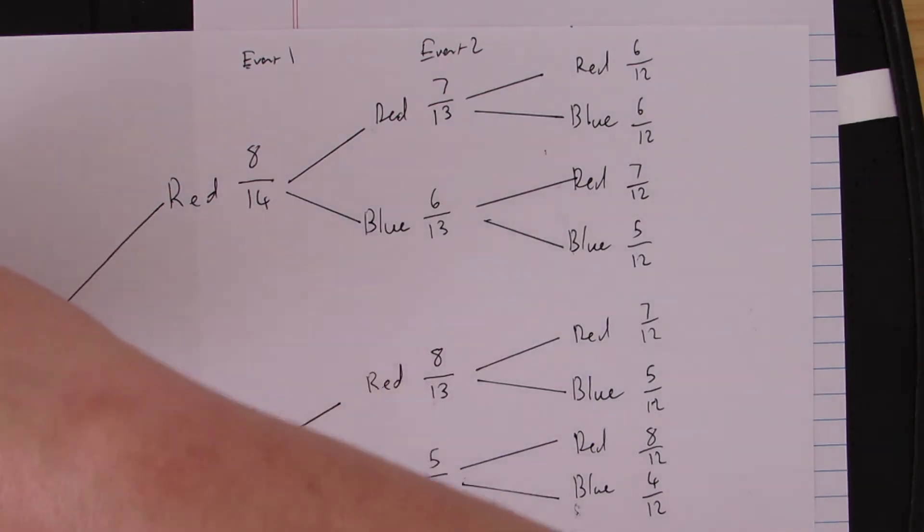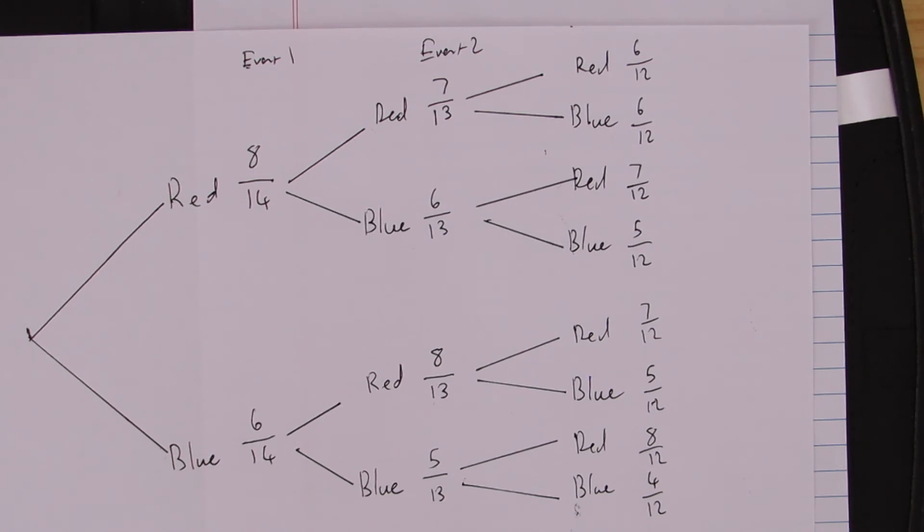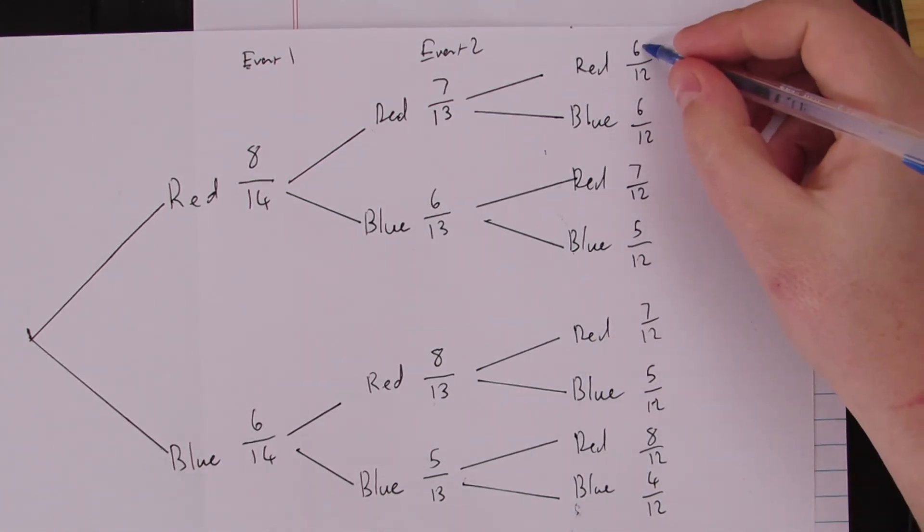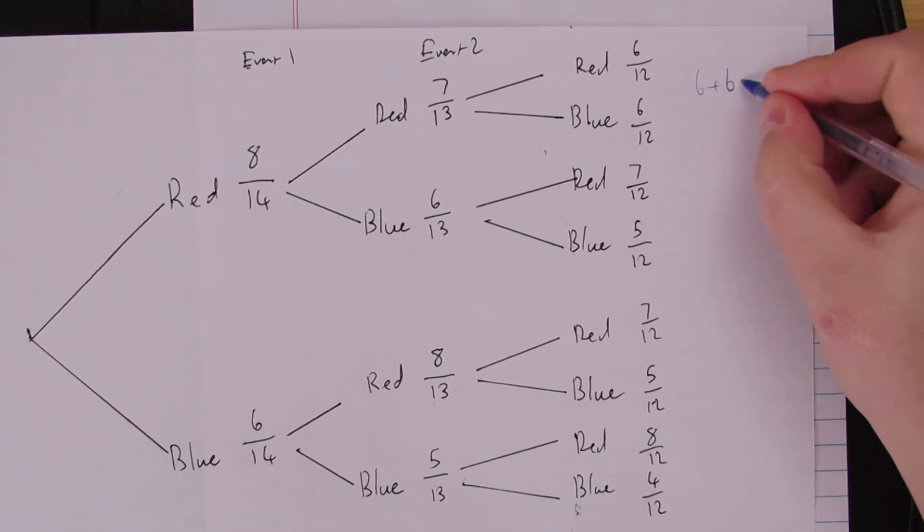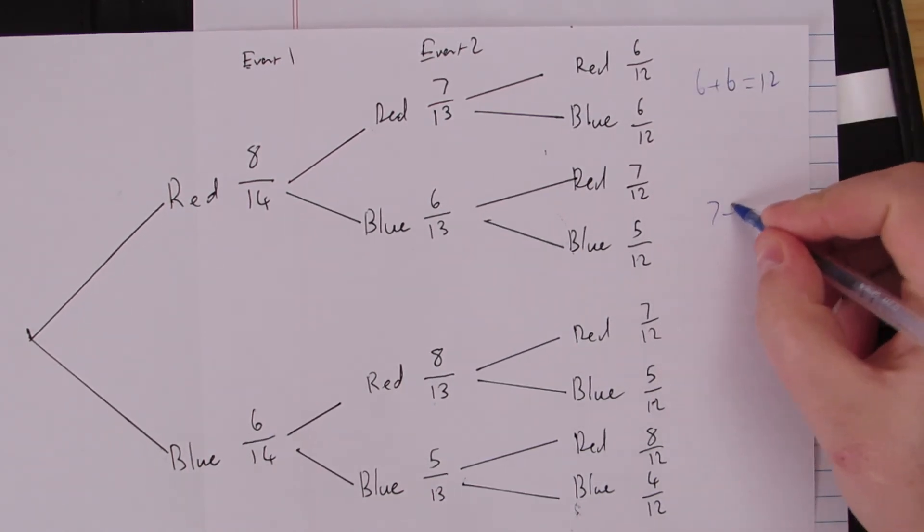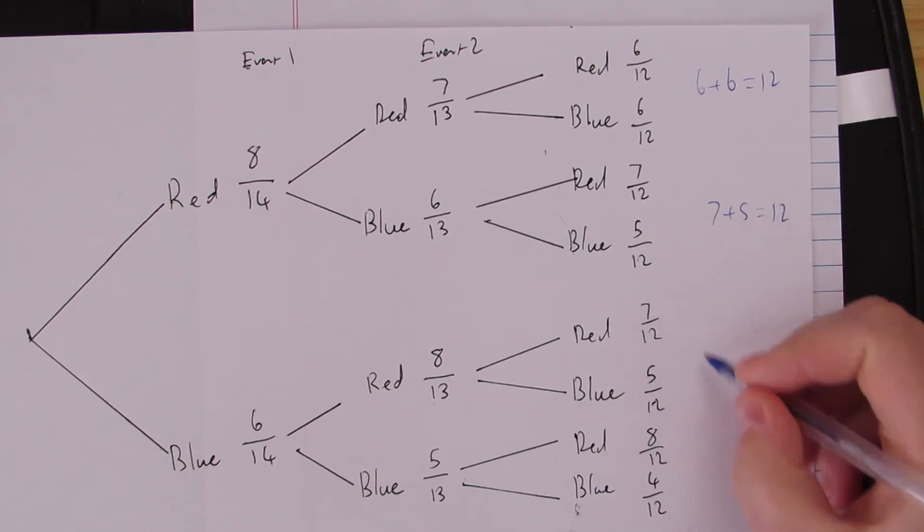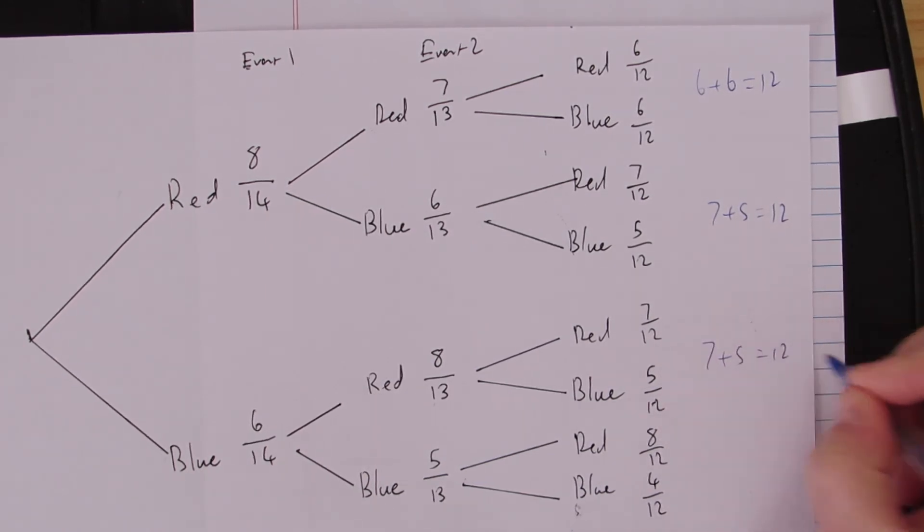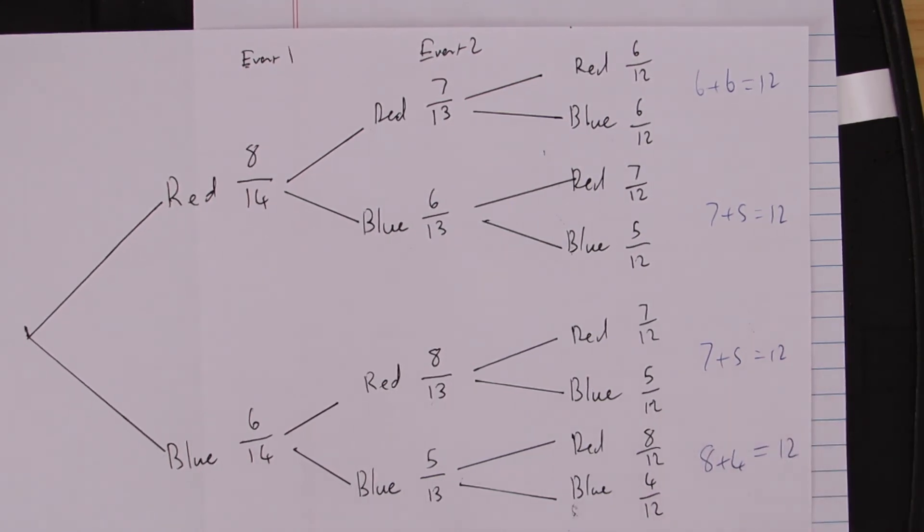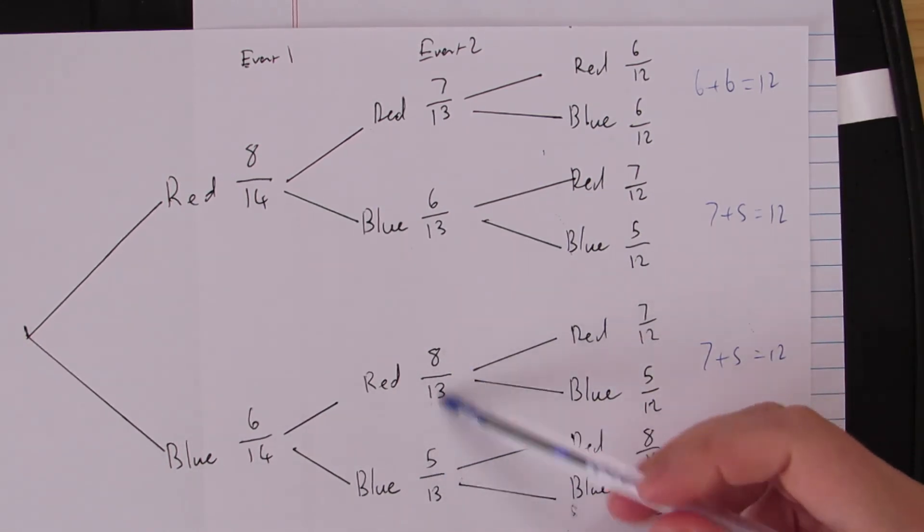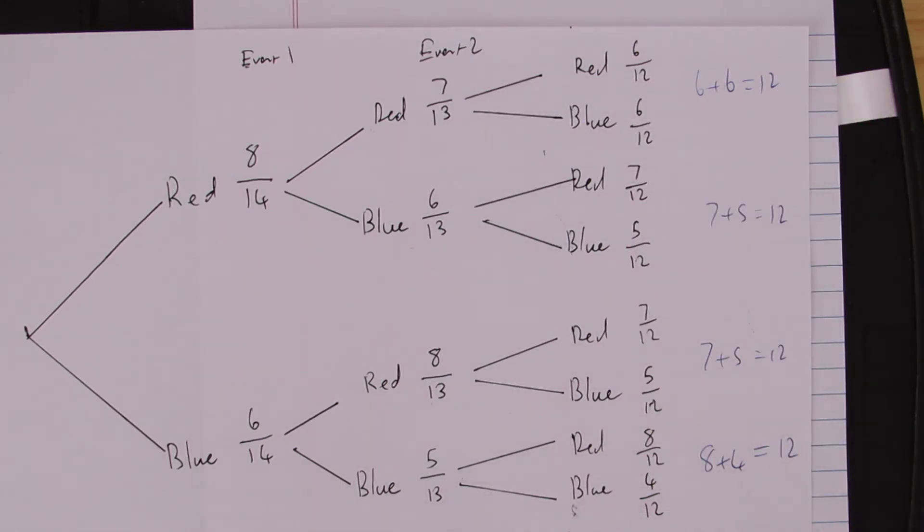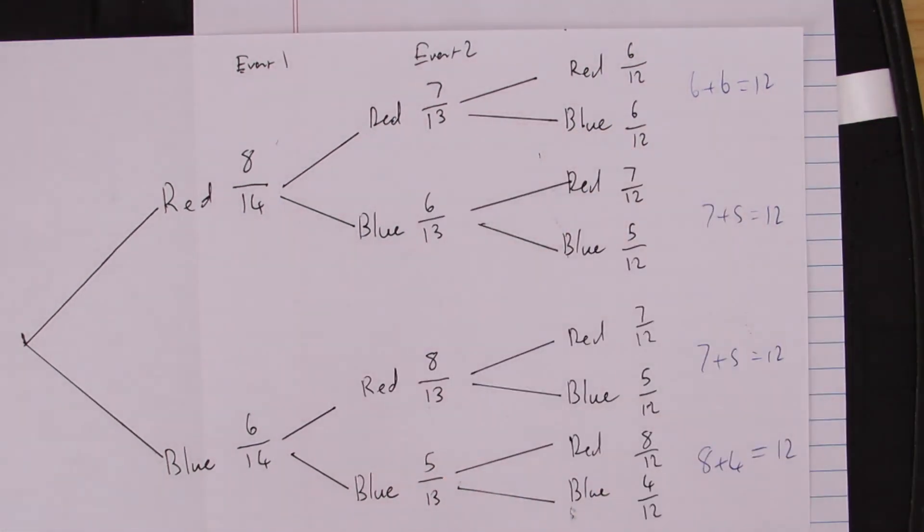Now, just to make sure that you've got this in your attention, you'll notice that if I take six and six, I get my twelve. If I take seven plus five, I get twelve. If I take seven and five, I get twelve. If I take eight and four, I get twelve. So we will always have something adding up there to get the same denominator, in the same way that these add up to get thirteen, and these add up to get thirteen, or those added together to give me fourteen. So, this is one way to approach your complex events.